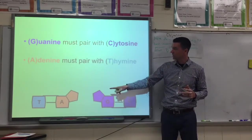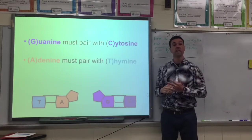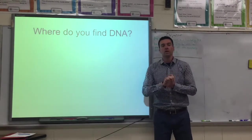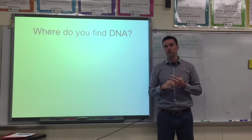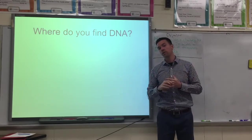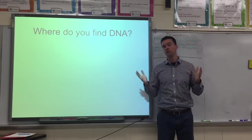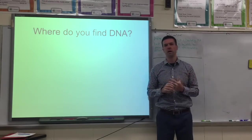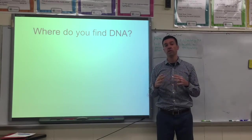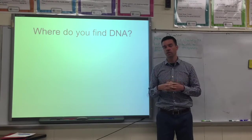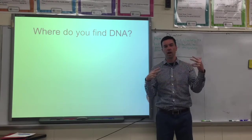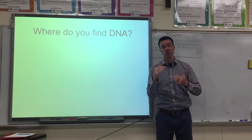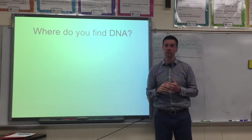GC, AT — that's the rule of DNA. There are other parts of DNA you may discover at a higher level, like phosphate, sugar, and hydrogen bonds, but for now the main thing to know is that guanine always pairs with cytosine, and adenine always pairs with thymine. The way they're ordered is really the reason that we're all different.